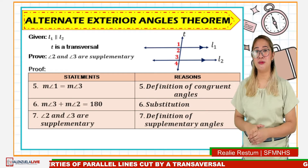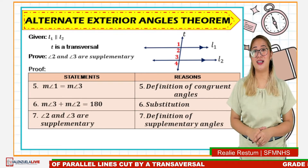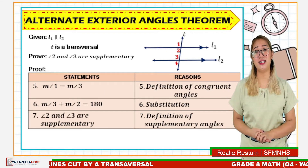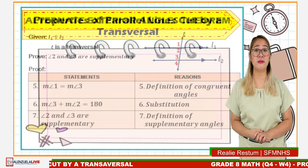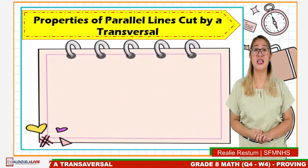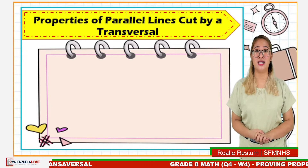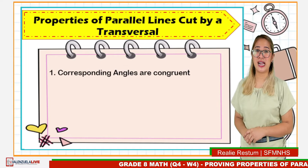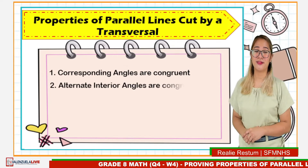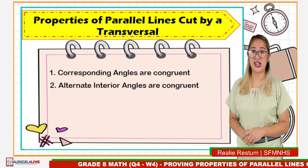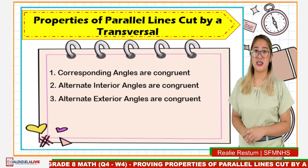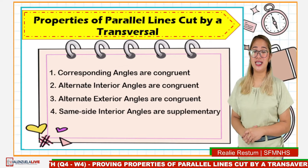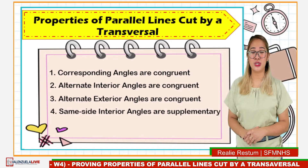We are now done proving the theorems on parallel lines cut by a transversal. These theorems and the postulate lead us to the following properties of parallel lines cut by a transversal: corresponding angles are congruent, alternate interior angles are congruent, alternate exterior angles are congruent, and same side interior angles are supplementary.